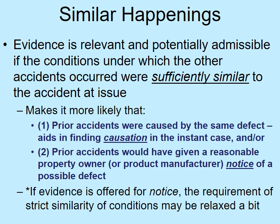Other happenings evidence can be relevant to one or both of two purposes. First, to show causation — other similar happenings make it more likely that prior accidents were caused by the same defect. Second, the evidence can be relevant to whether the property owner or manufacturer had notice of a possible defect. As a general rule, the similarity requirement will be most strictly applied in the first context — courts will be stricter about similarity if the evidence is offered to prove causation than simply to prove notice that a product or condition might be unsafe.